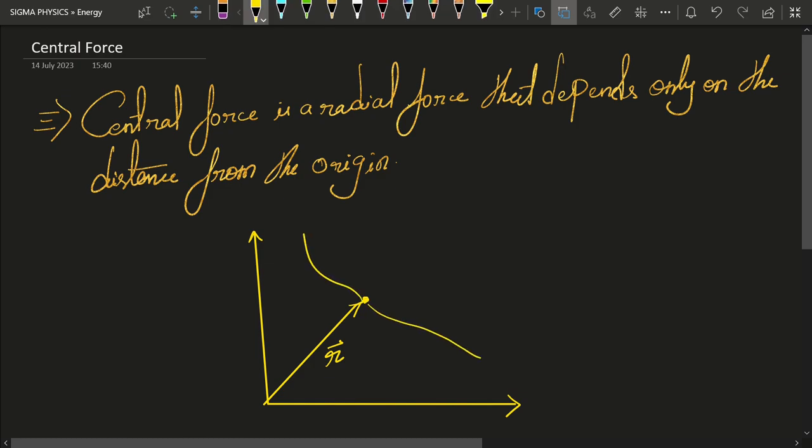Then its displacement vector dl would be equal to, as you know from our video on polar coordinate system, it will be dr r cap plus r d theta theta cap.